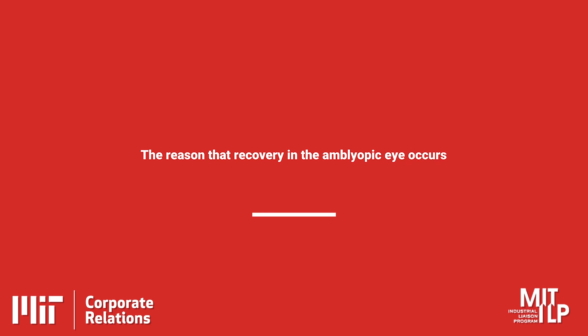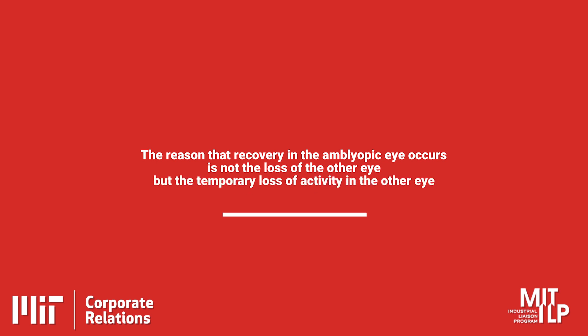What has precipitated this recovery? What has allowed it to occur, and can we come up with a way to cause recovery without the loss or damage to the other eye? That's the question. We've applied our understanding of the basics of synaptic plasticity combined with some theoretical work to come up with a hypothesis: the reason recovery in the amblyopic eye occurs is not the loss of the other eye, but the temporary loss of activity in the other eye.